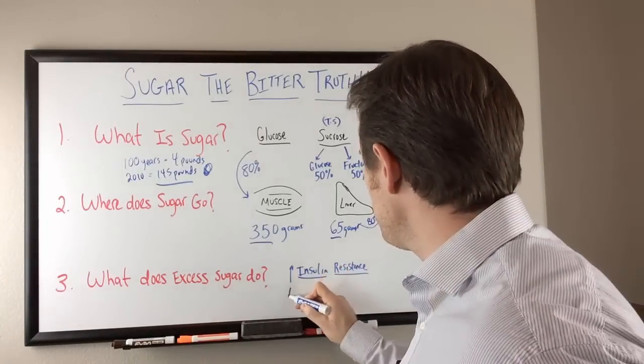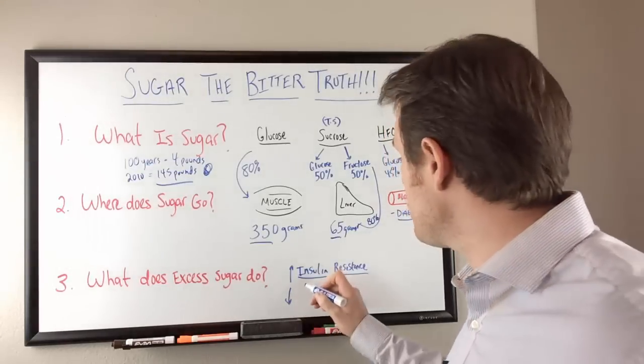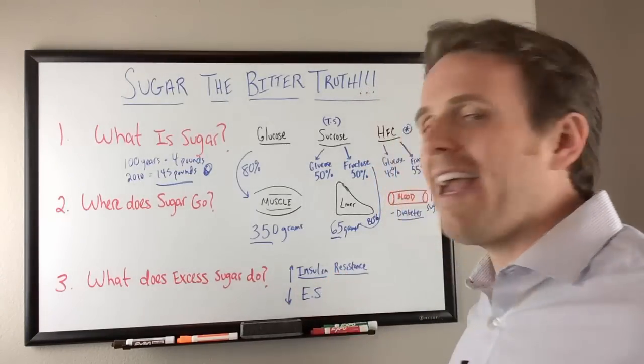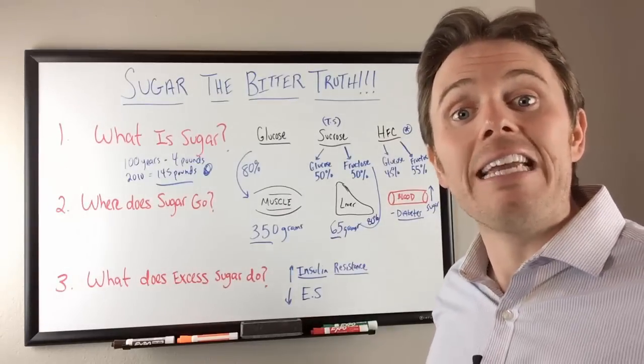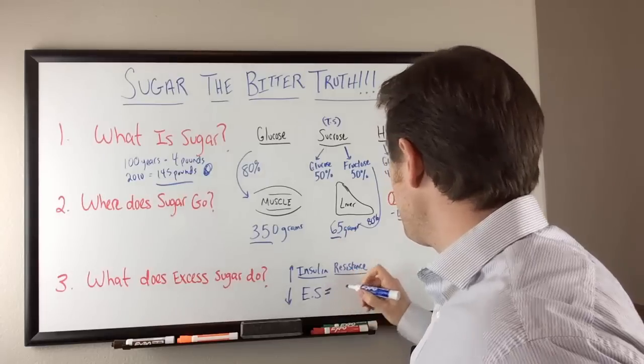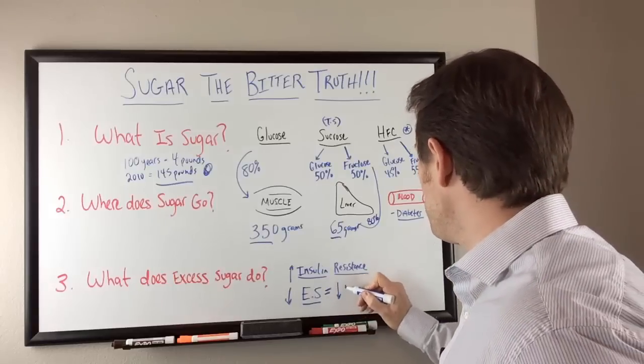Also, it down regulates this enzyme called endothelial synthase. So I'm just going to call it ES for short. What endothelial synthase does is it increases nitric oxide or NO2. So when we have low endothelial synthase, we also have low NO2.